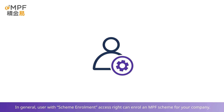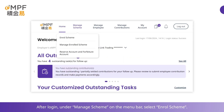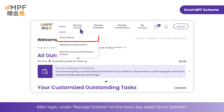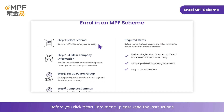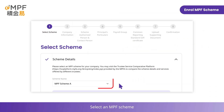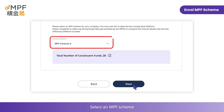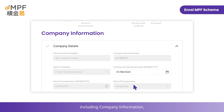In general, a user with scheme enrollment access rights can enroll an MPF scheme for your company. After login, under Manage Scheme on the menu bar, select Enroll Scheme. Before you click Start Enrollment, please read the instructions and prepare the required items listed on the screen, then select an MPF scheme.